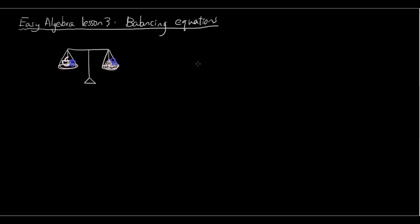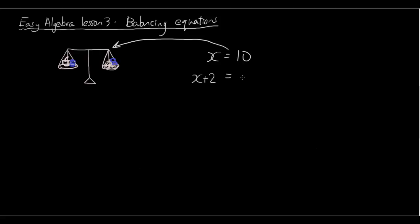If we have, for example, x equals 10, you can imagine the equal sign as the scale. The equal sign is the scale, x is whatever is on the left, and 10 is whatever is on the right. Now if we add 2 to x on the left — x plus 2 — then you have to do the same thing on the right, which is 10 plus 2. So you can then simplify this as x plus 2 equals 12.